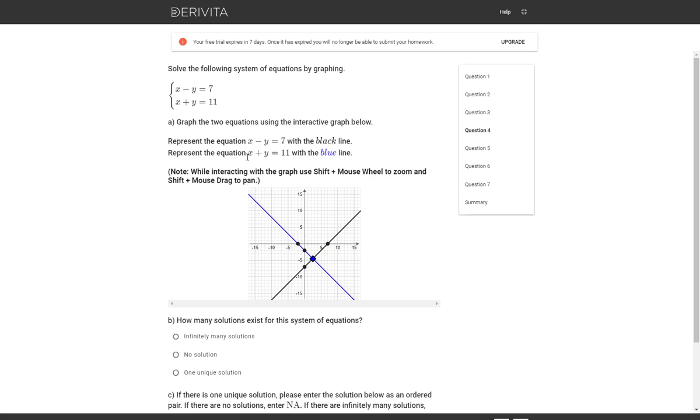And then the intercepts for the other line, the blue line, is at 11 and 11. So I'll grab the point, drag it over to 11. Sometimes you got to work with it a little bit. And then the other one up to 11.